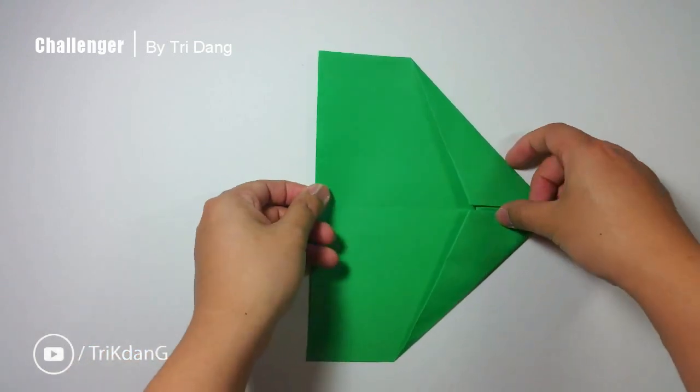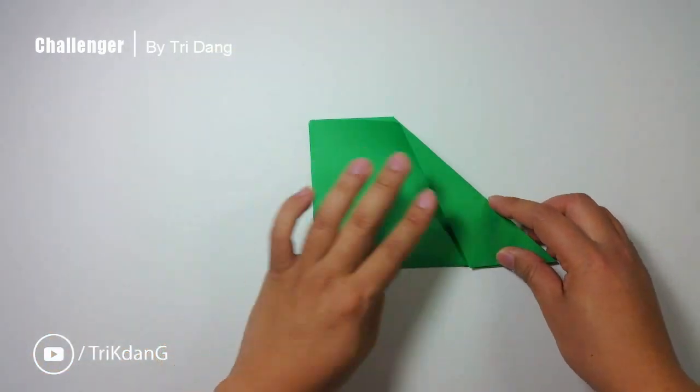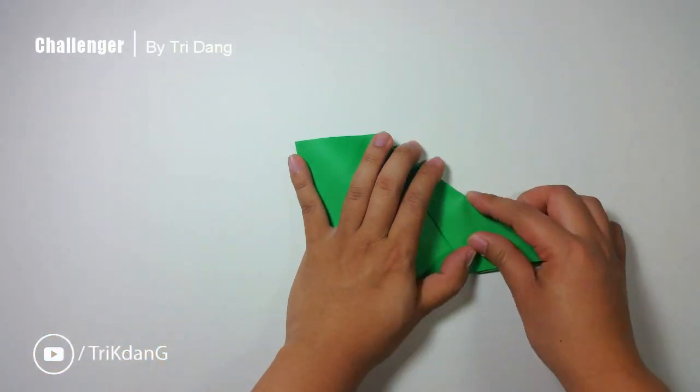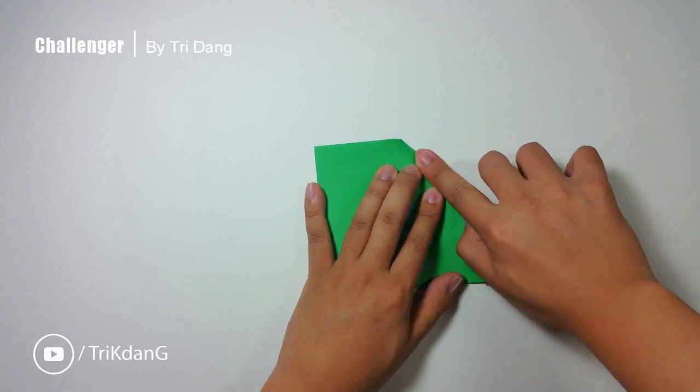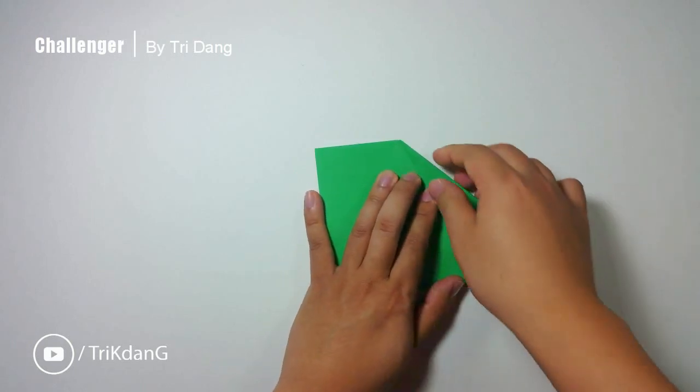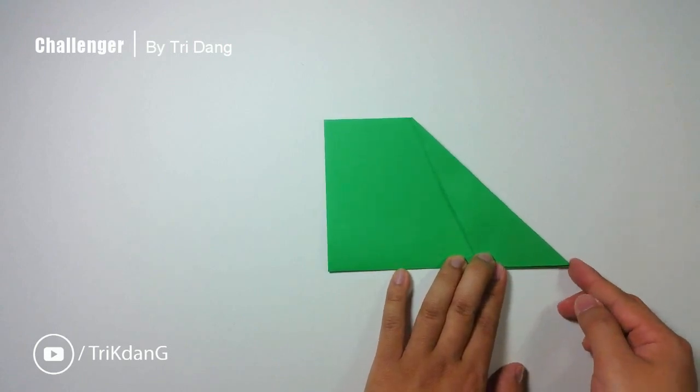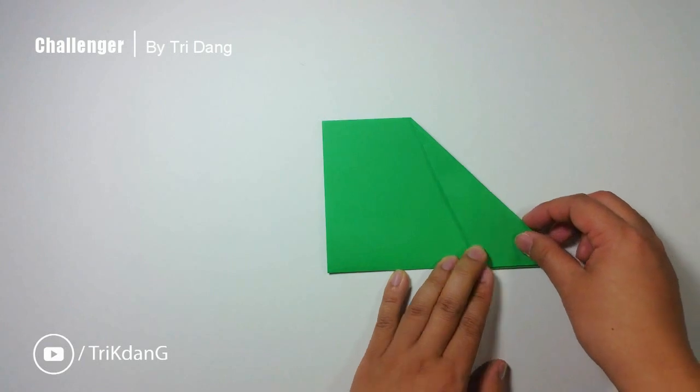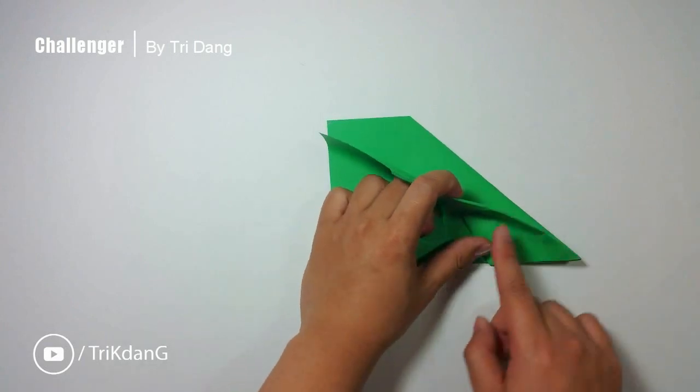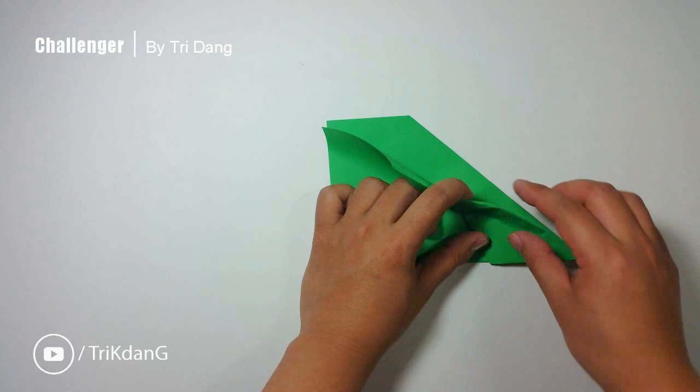Then, turn the paper over, fold it in half. Next, estimate about half an inch from this tip along this edge, and then match this edge to this corner.